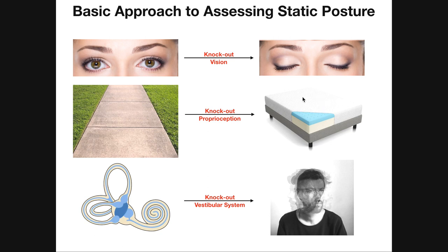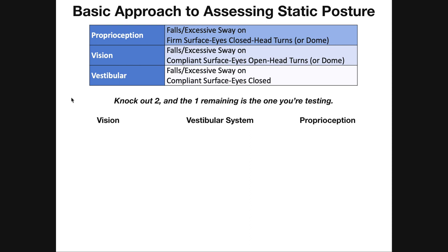Go from a firm surface to a compliant surface to knock out proprioception. To knock out the vestibular system, you just need to disturb it — basically rotating your head back and forth repeatedly. You'll make yourself dizzy, but that's the point. So you're going to have to do three tests: test vision, test the vestibular system, and test proprioception. The general rule is you knock out two of them, and the one remaining is the one you're testing.